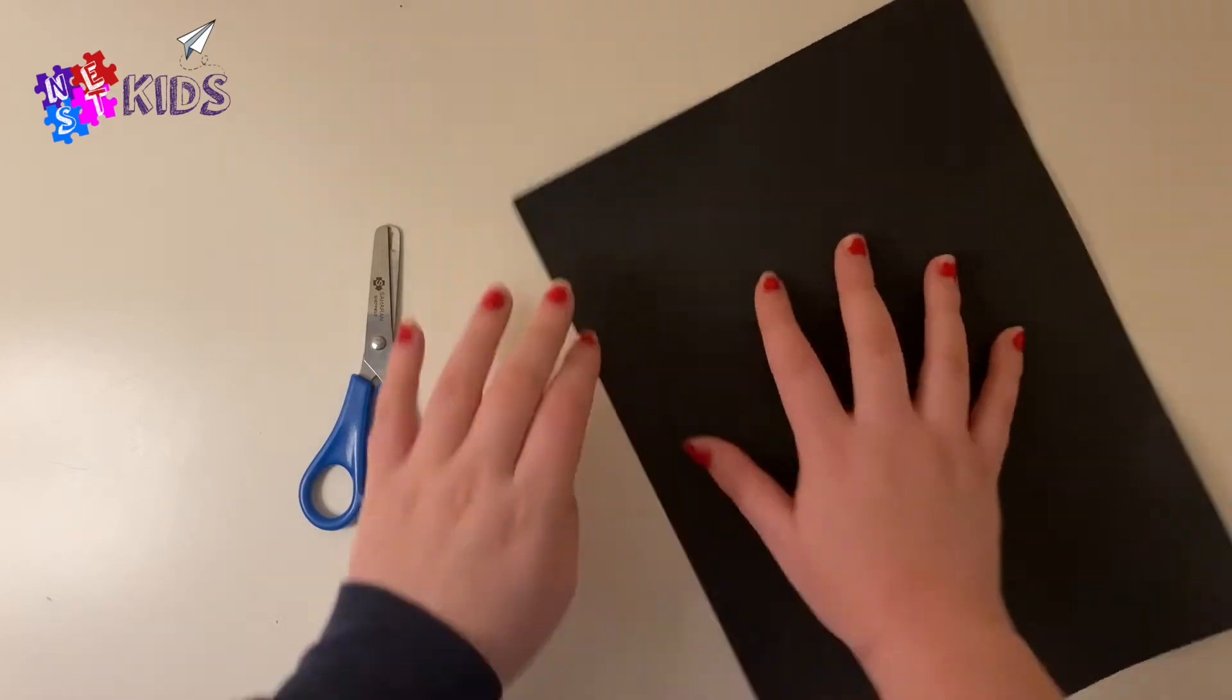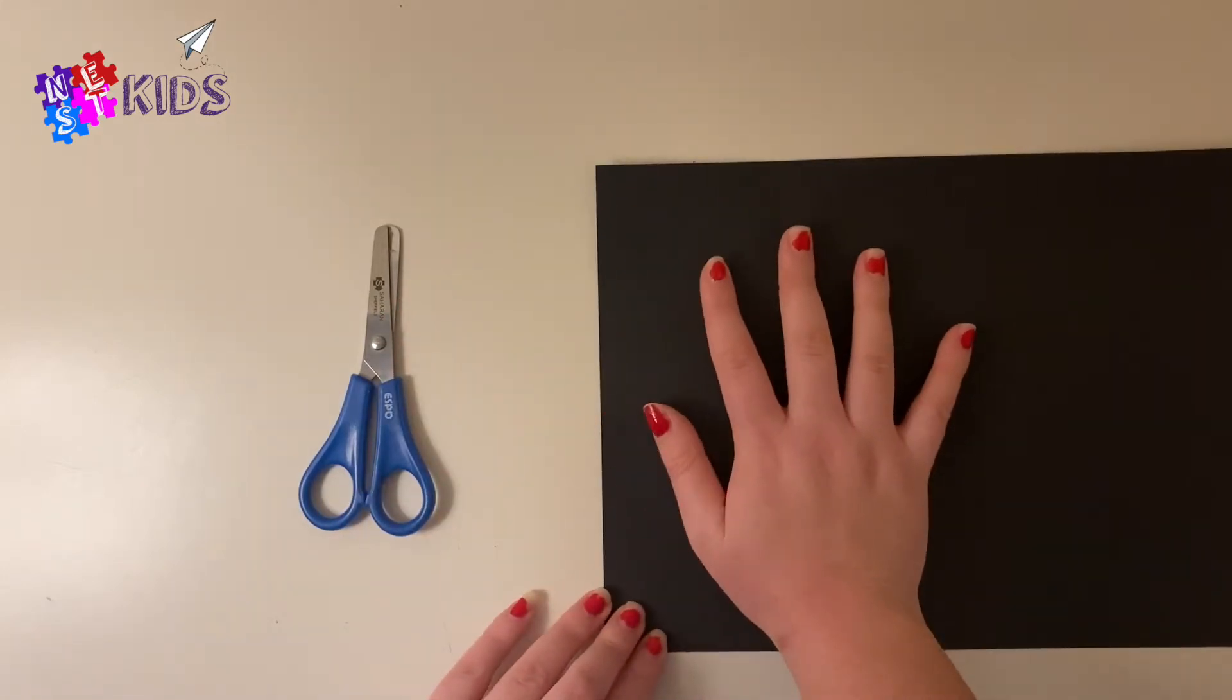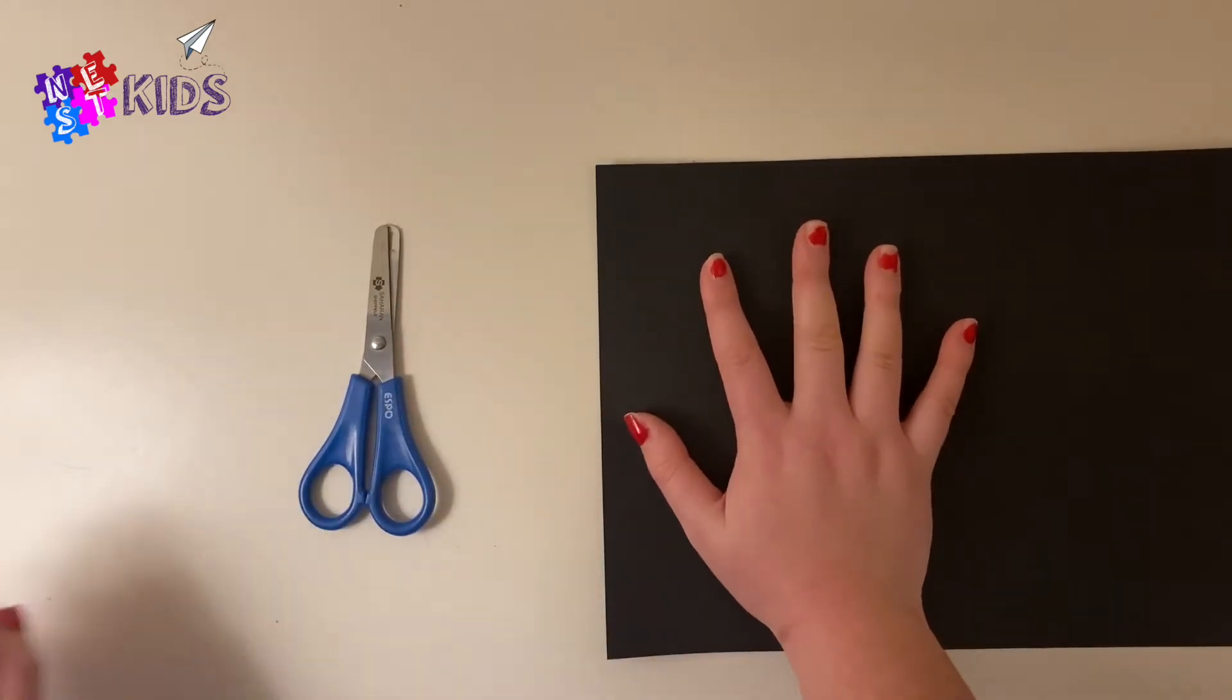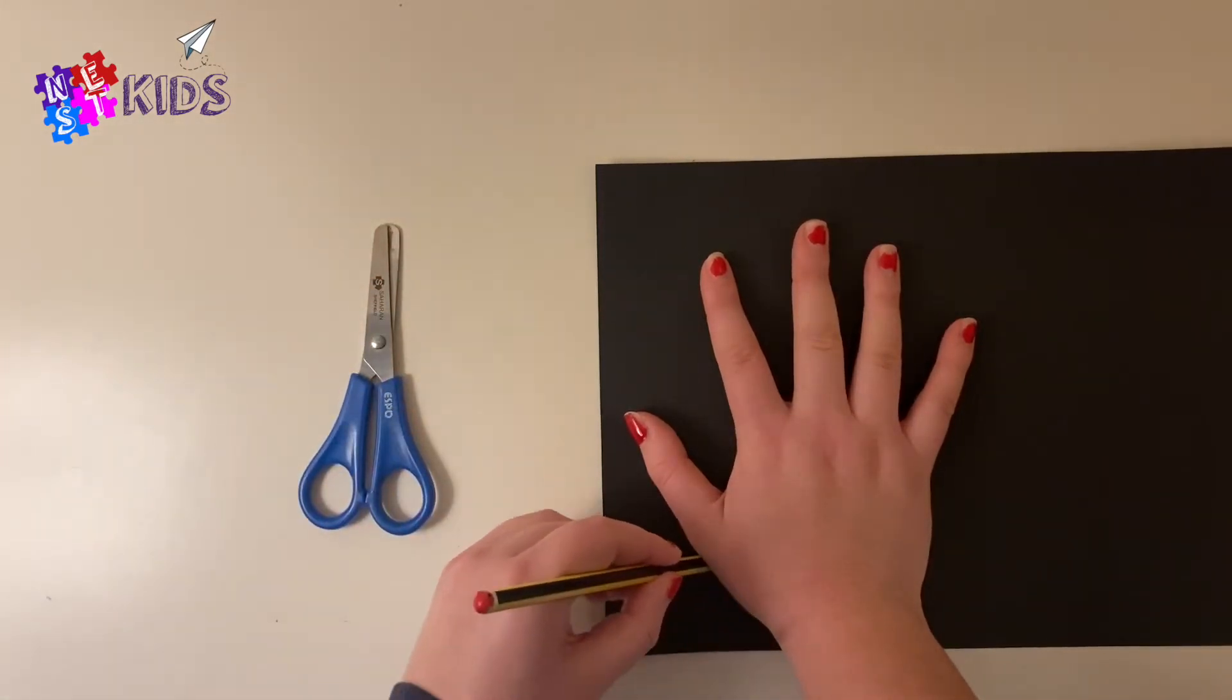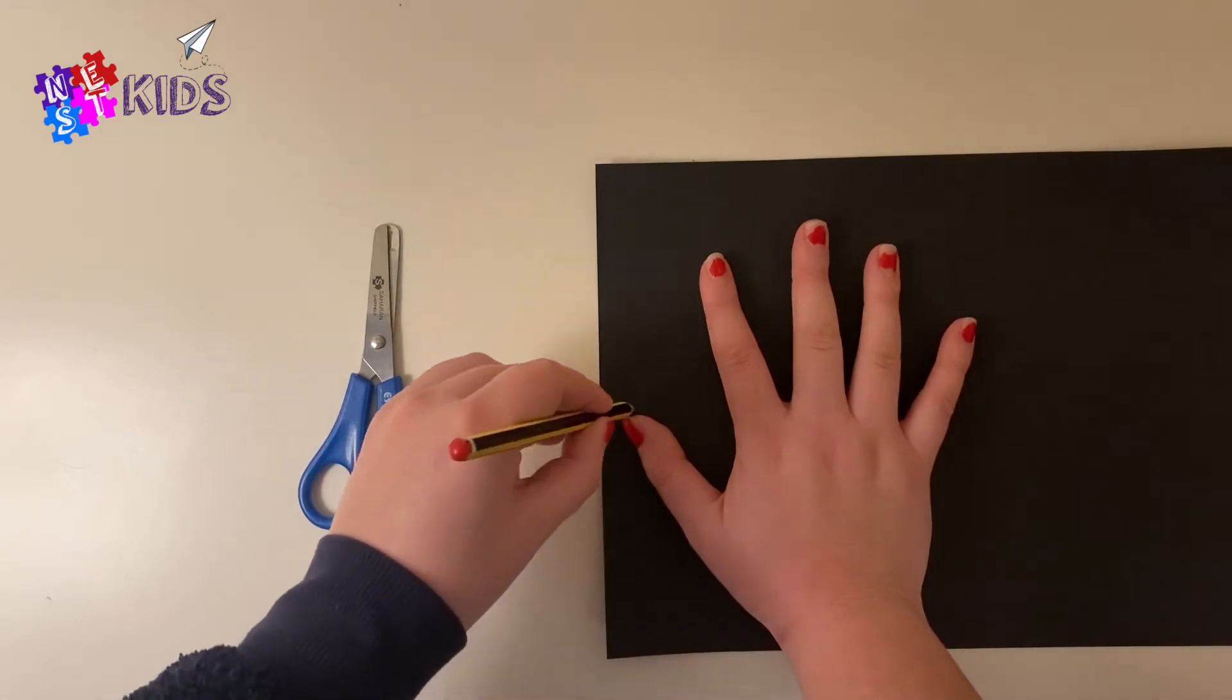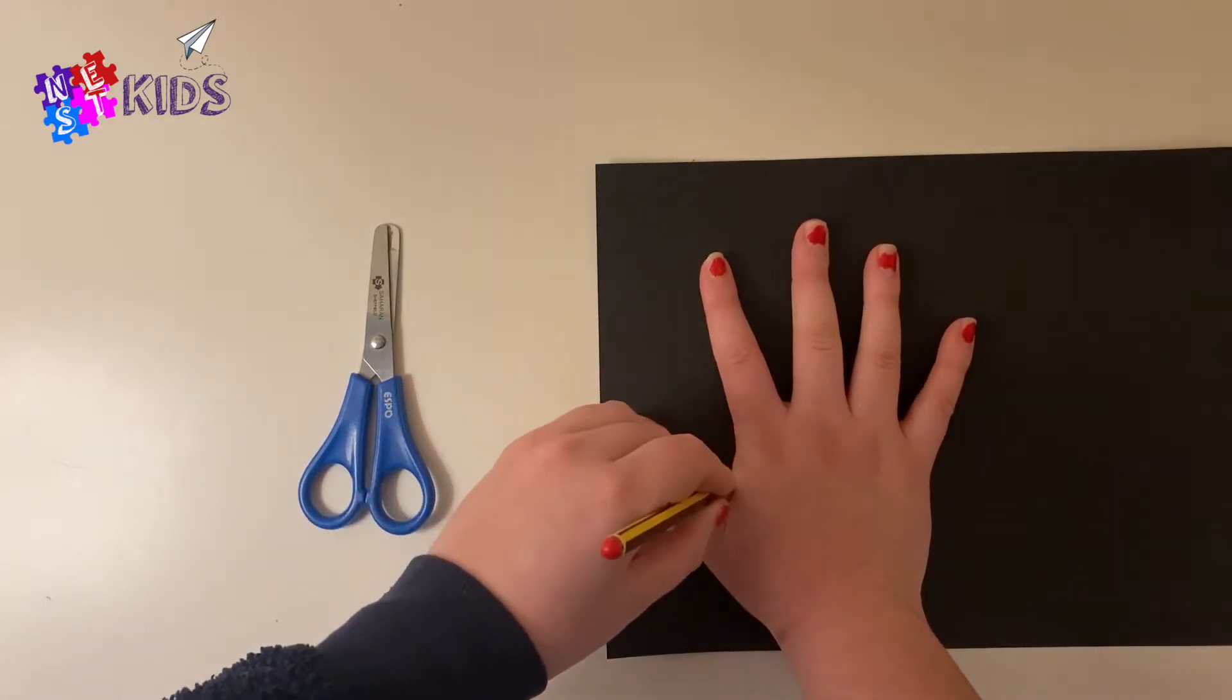The first thing you're going to do is get your black card and your scissors, and you're going to put your hand on your card like so. Then get your pencil with your other hand. Now it might be a bit tricky, but you need to draw around your other hand. See, I'm doing it here, all the way around.